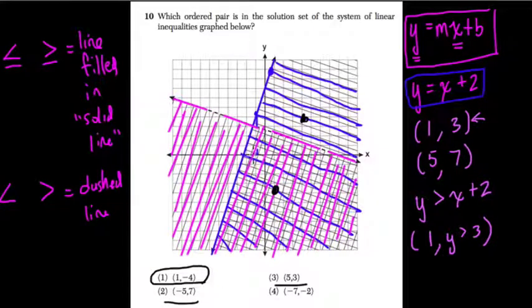Negative 5, 7 is not in either. So 1, 2, 3, 4, 5, and up 7. 1, 2, 3, 4, 5, 6, 7. That point is not in any of the solution sets there.